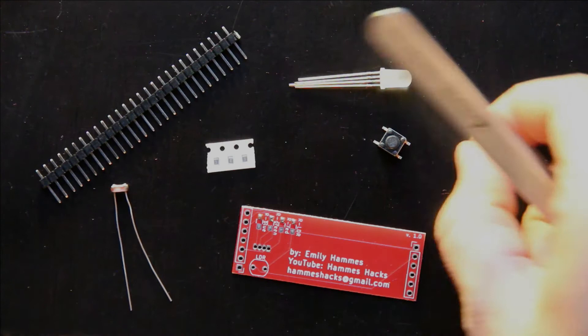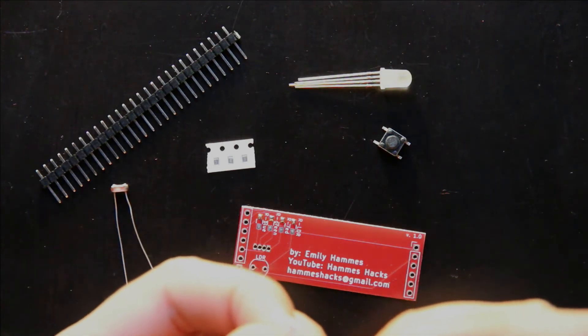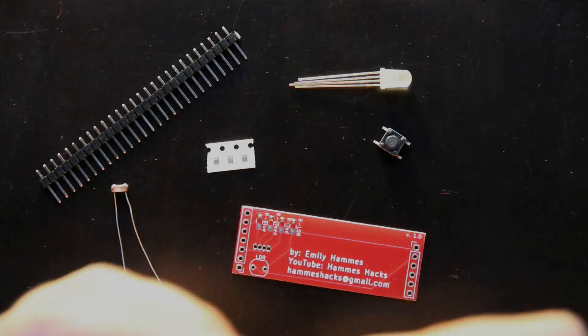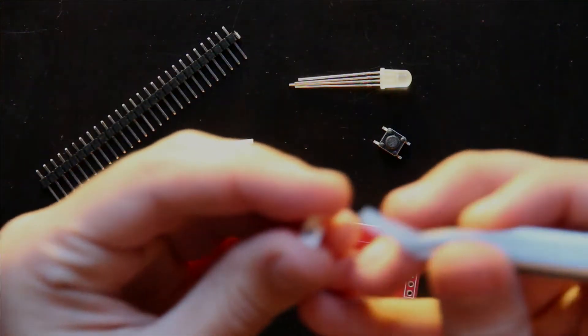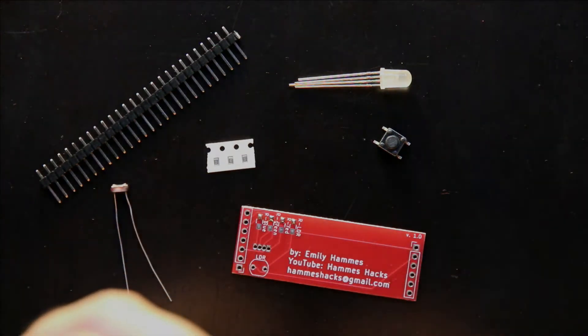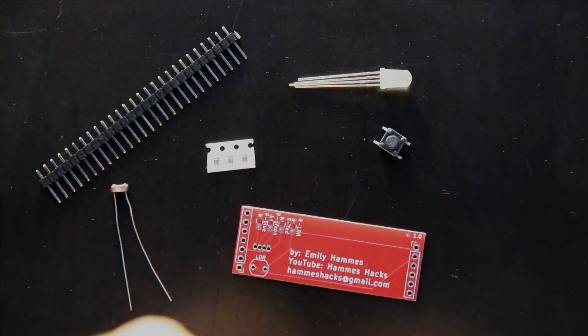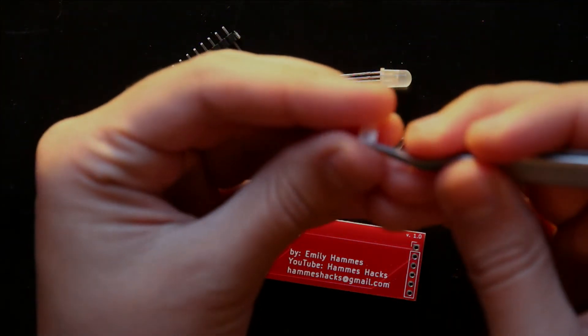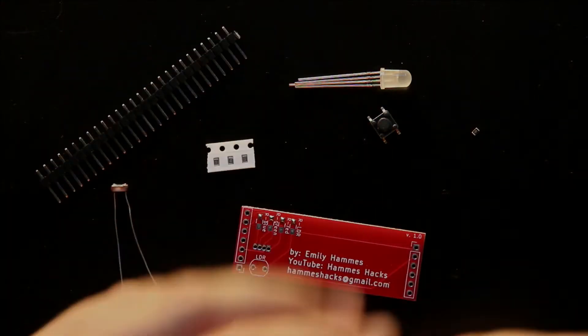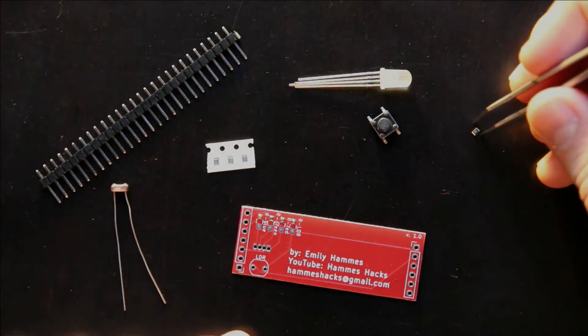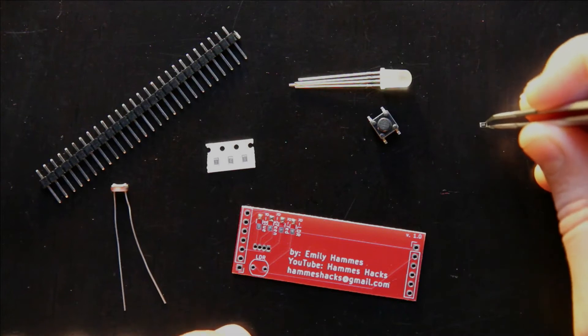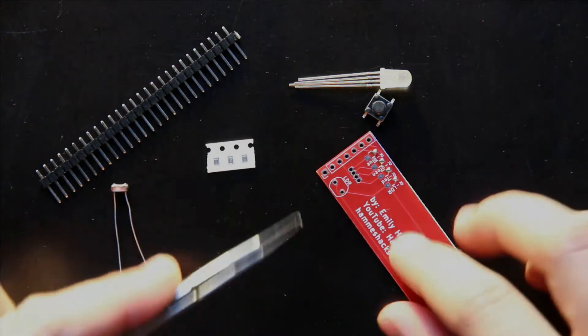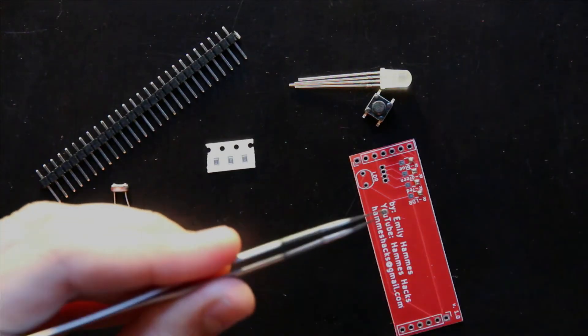Then I open the resistor package, which are these tiny little packages. And I set it on the table, and there should be one that's labeled 103, and that stands for 10 kiloohms.